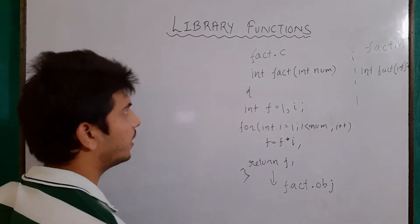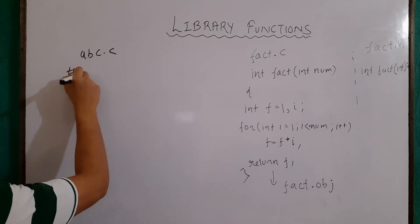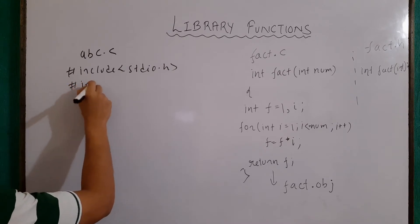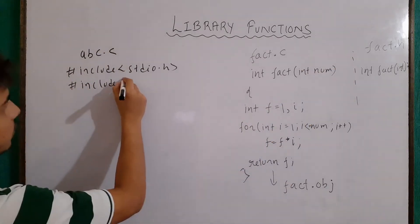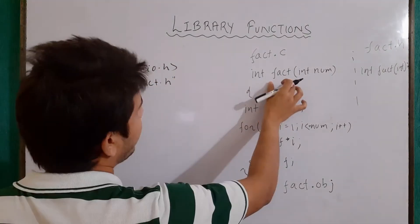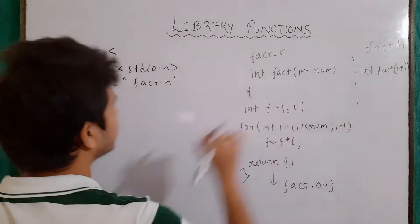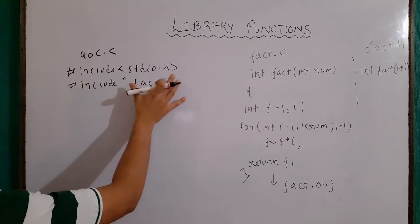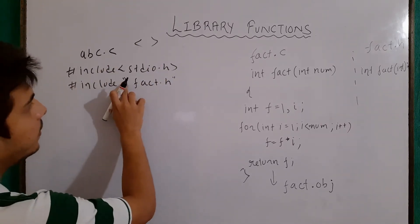Now let's say I want to use this functionality. I will create a simple program file — let's say abc.c. Then I'll write #include stdio.h and then #include fact.h. I should include fact.h because we will be using the fact function later in the program, so we have to include its prototype, which is written in the fact.h header file. Note that here I am using double quotes because this is a custom header file. Standard header files are written with less-than and greater-than symbols, and custom header files are written in double quotes.